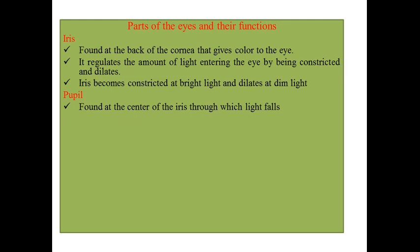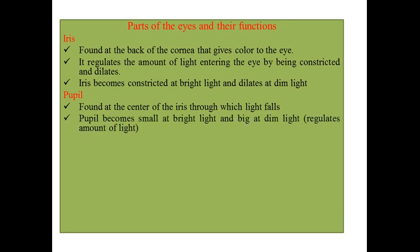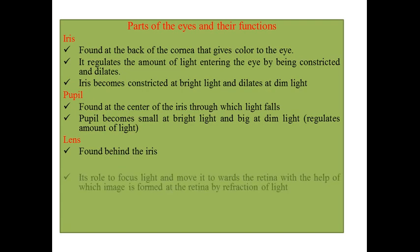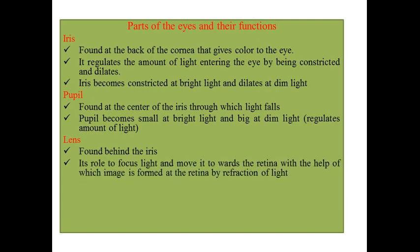The next part is the pupil. The pupil is found at the center of the iris and also helps regulate the amount of light. The pupil becomes large at dim light and becomes small at bright light.